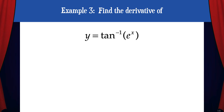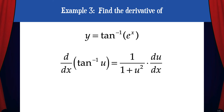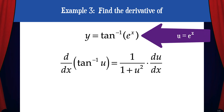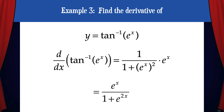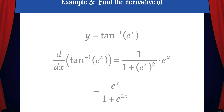Example 3: Find the derivative of y equals tan inverse of e to the x. To solve this we're going to need to use the template for the derivative of tan inverse of u, which is 1 over 1 plus u squared times du/dx. In this case u equals e to the x, so we get 1 over 1 plus e to the x squared times e to the x because of the chain rule. And this simplifies to e to the x over 1 plus e to the 2x.